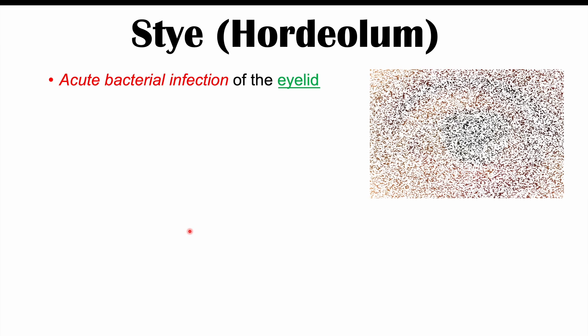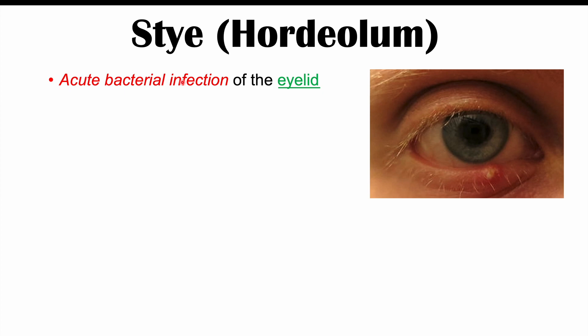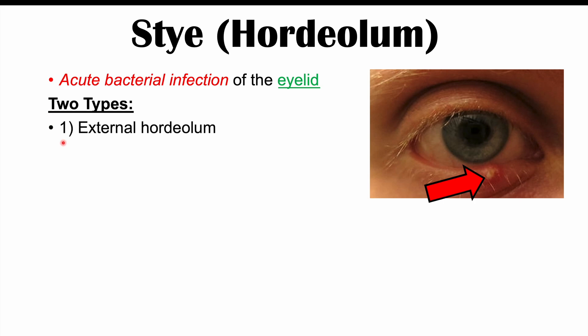A stye or hordeolum is an acute bacterial infection of the eyelid. There are actually two types: an external hordiolum and an internal hordiolum. We'll talk about the differences later when we discuss the pathophysiology. This is what an external hordiolum looks like, and we'll look at pictures of an internal hordiolum later.